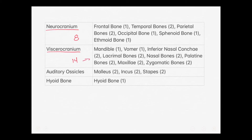Visceral cranium means facial bones. These two groups — the neural cranium and the visceral cranium — make up the bones of the skull. The auditory ossicles and the hyoid bone are also part of the bones of the head, and all four of these groups together form the bones of the head.